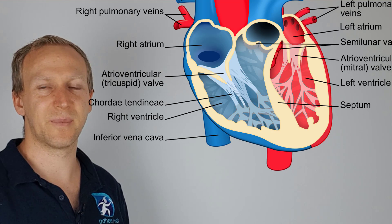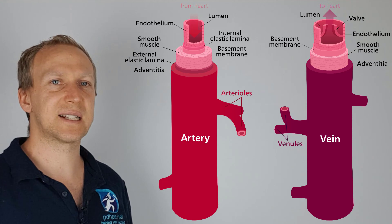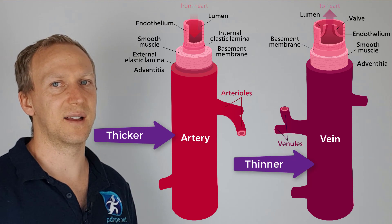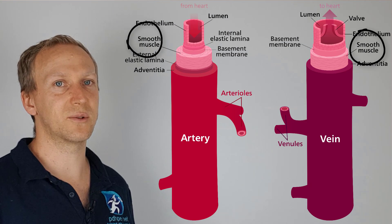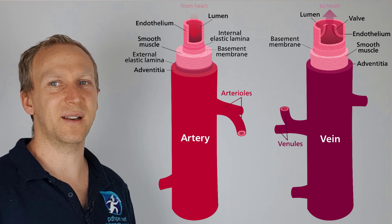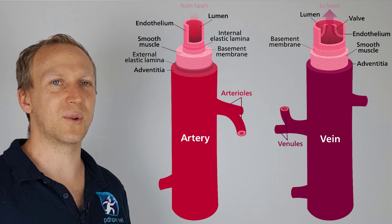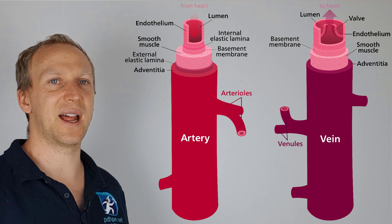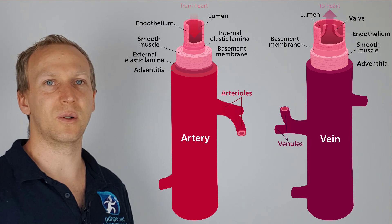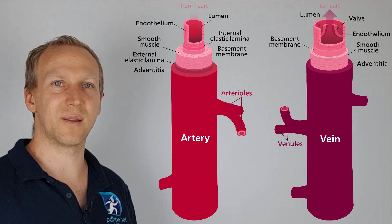The heart also has an aortic valve, a pulmonary valve, the intraventricular septum, and the myocardium — the muscle that makes up the heart. Looking at arteries and veins together: both have an endothelium and smooth muscle, though the muscle in arteries is thicker. Arteries also have an elastic lamina — both inner and outer — and an adventitia. Only veins have valves, which allow blood to travel in one direction. When a contraction occurs, the valve closes to prevent blood from flowing back.